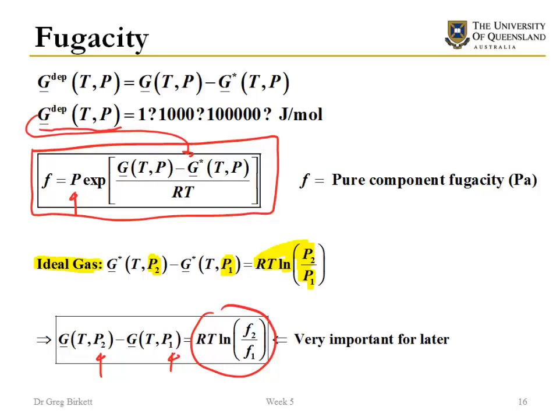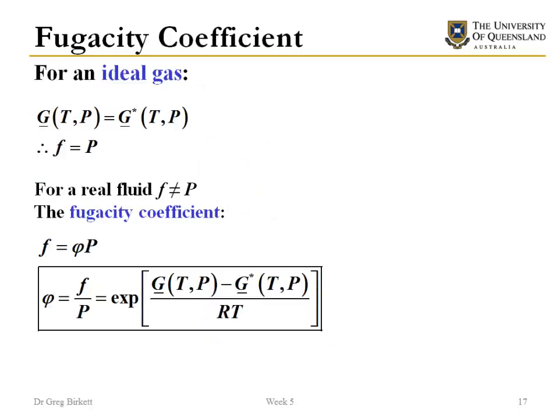What this shows you is that the fugacity can be considered something of a corrected pressure. It has the same units as pressure, so fugacity will be in pascals or kilopascals. In the ideal gas limit, the fugacity has to be equal to pressure, so it's a really nice model from that point of view.